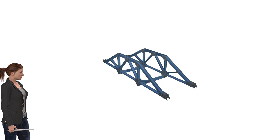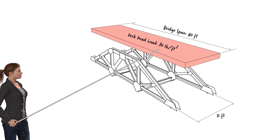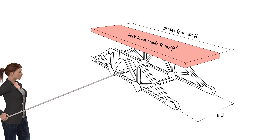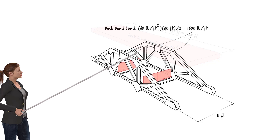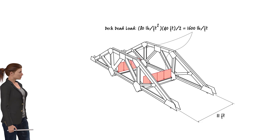Suppose the weight of the deck is 80 pounds per square foot. Since the deck rests on two cross beams, the magnitude of the distributed load acting on each beam can be calculated as shown. And since each end of the cross beam is connected to a truss joint, each interior joint along the bottom chord of the truss takes 8.8 kips of dead load.